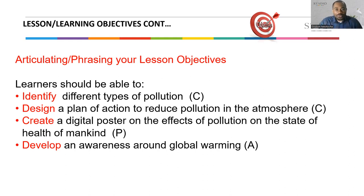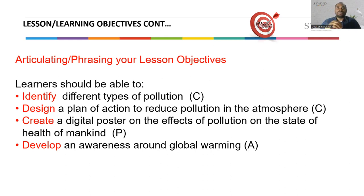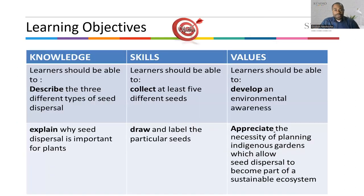With knowledge outcomes — the cognitive domain — if you ask learners to identify which of three pictures relates to water pollution versus environmental pollution, they will be able to look at the pictures and identify it. If you ask them to design a plan of action to reduce pollution, they'll be able to design and present a plan. These outcomes you can measure right there and then.